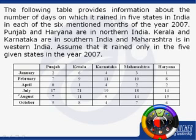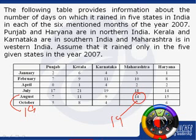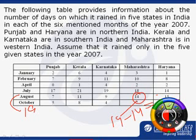The total number of days on which it rained in August is 19. Now let's consider the state Maharashtra. The number of days on which it did not rain in Maharashtra in August will be 19 minus 14, which is equal to 5.